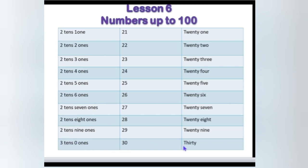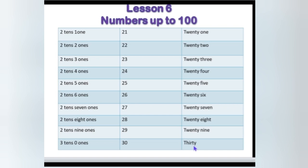Spell 30: T, H, I, R, G, Y — 30. Then numbers from 31 to 40.